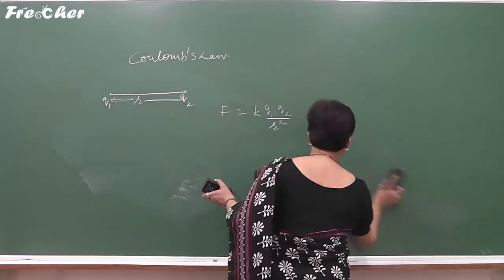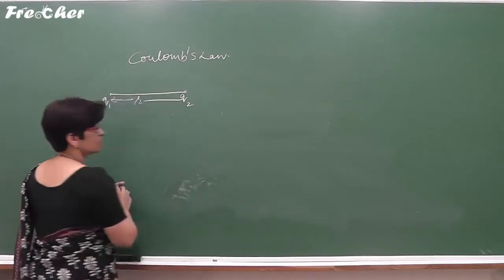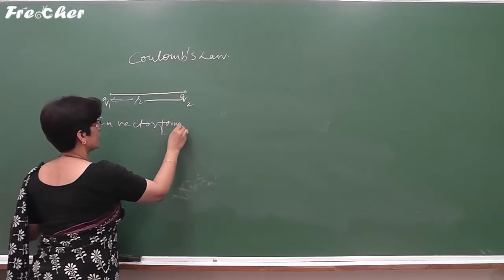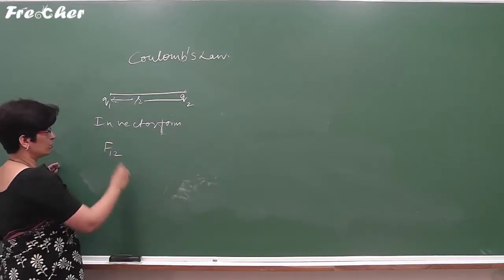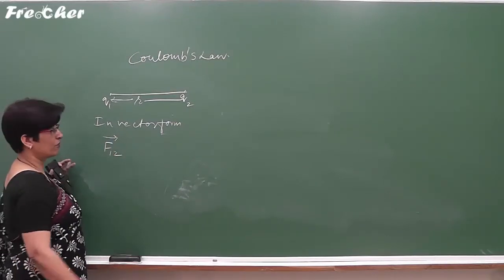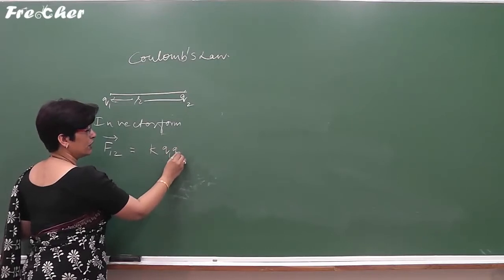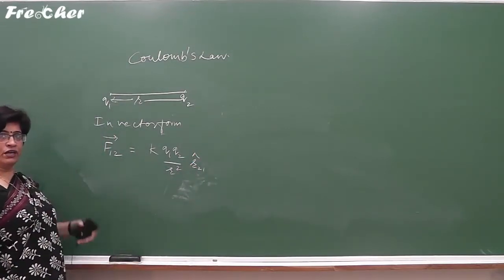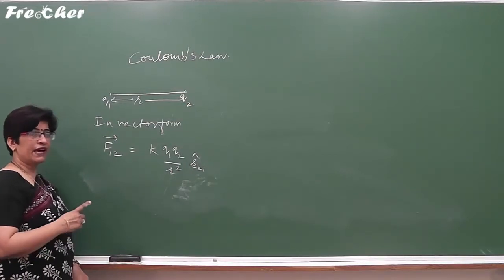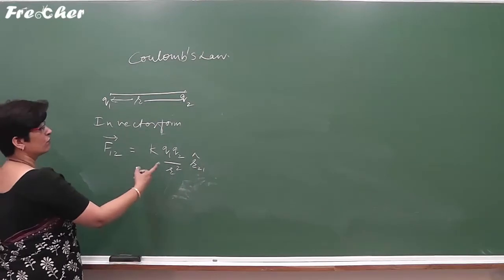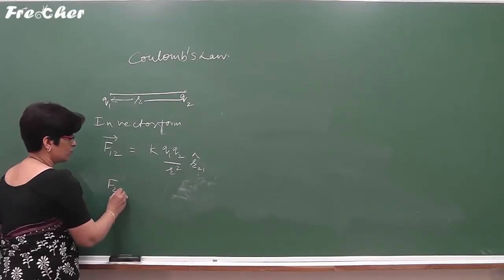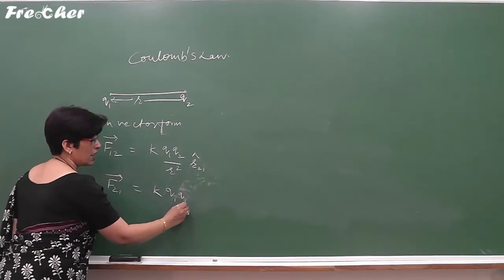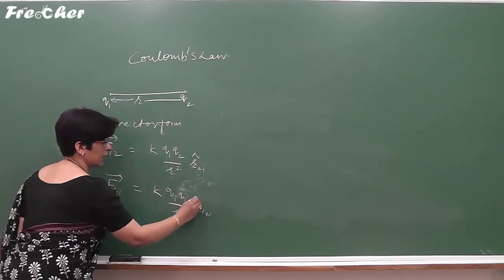For that, we have to mention the force acting by the first charge on the second charge. In vector form, the force on charge 1 due to charge 2 is given by K·Q1·Q2 upon R² into R̂₂₁. This unit vector R̂₂₁ explains the direction of the force. Similarly, F₂₁ — force on 2 due to 1 — is given by K·Q1·Q2 upon R² into R̂₁₂.